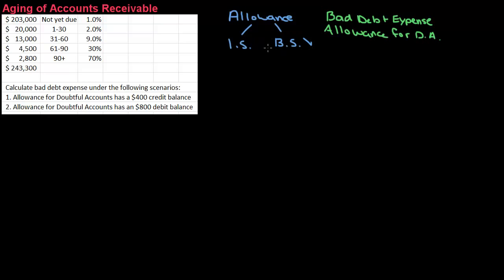So if you watch the video on the percent of accounts receivable method, the aging of accounts receivable is very similar. The only difference is instead of taking the total and multiplying it by one percentage, what we're going to do is we're going to look at how old each one of the receivables is. Because if you think about it, the older a receivable is, the less likely it is that we're going to collect it. So what the aging method does is it looks at the age of the receivables and says based on how old it is, we're less likely to collect it.